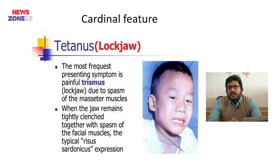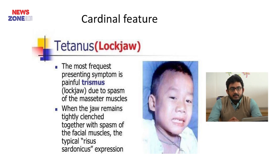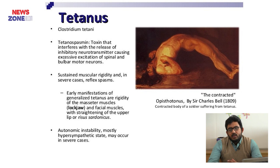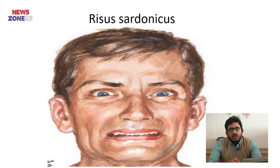The cardinal features of Tetanus — Tetanus has 3 cardinal features: Trismus, Opisthotonos, and Risus Sardonicus. Trismus is the most frequent presenting symptom, characterized by painful masseter muscle spasm, which results in locked jaw. When the jaw remains tightly clenched together with spasm of facial muscles, that presentation is known as Risus Sardonicus. The third presentation is Opisthotonos, depicted in a picture by Sir Charles Bell, showing the contracted body of a soldier suffering from Tetanus.